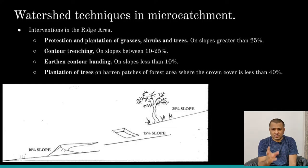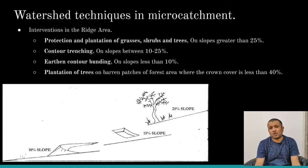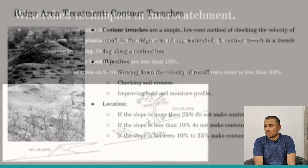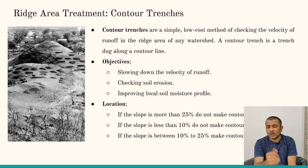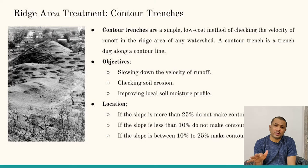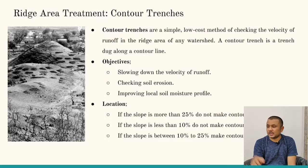Counter trenches are simply trenches excavated along the contour lines, which is why they are called counter trenches. There are two types: staggered counter trenches and continuous counter trenches. We demarcate all the contour lines in the field, then either dig trenches along the contour lines at regular intervals continuously, or make staggered portions. Both types have their own advantages.